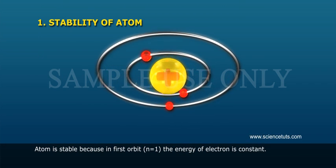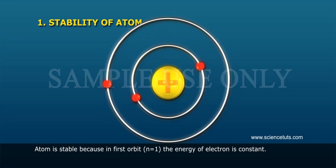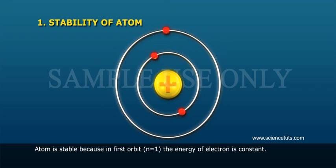1. Stability of atom. Atom is stable because in first orbit n is equal to 1, the energy of electron is constant.